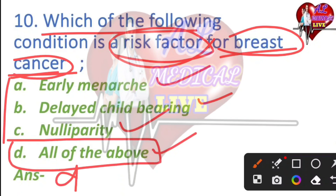Many of the options have early menarche and breast cancer risk factors. We have delay childbearing as a risk factor for breast cancer. So we have all of the evidence — the right answer is option D, all of the above. Which is the next question?